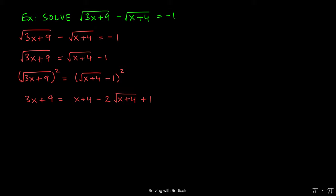On the right-hand side when we square square root of x plus 4 minus 1, we can either use a special product formula or just FOIL it out. Either approach gives us x plus 4 minus 2 times the square root of x plus 4 plus 1.